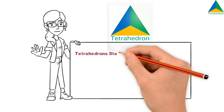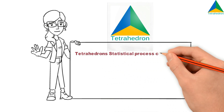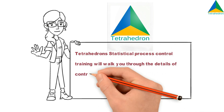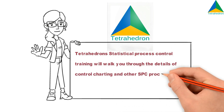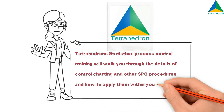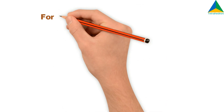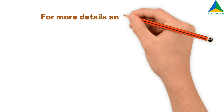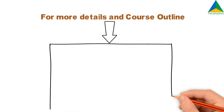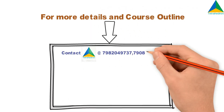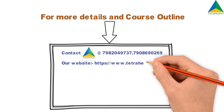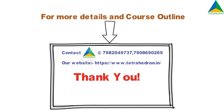Tetrahedron Statistical Process Capability Control Training will walk you through the details of control charting and other statistical process control procedures, and how to apply them within your organization. For more details and course outline, you can contact us and visit our website. Thank you.